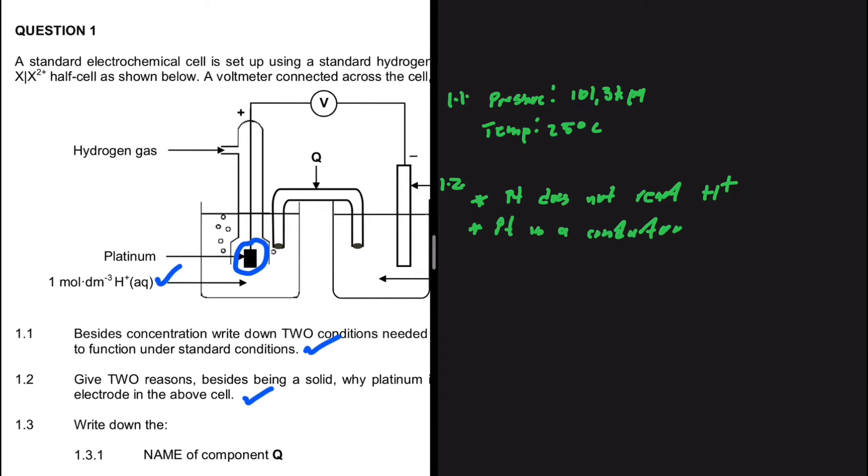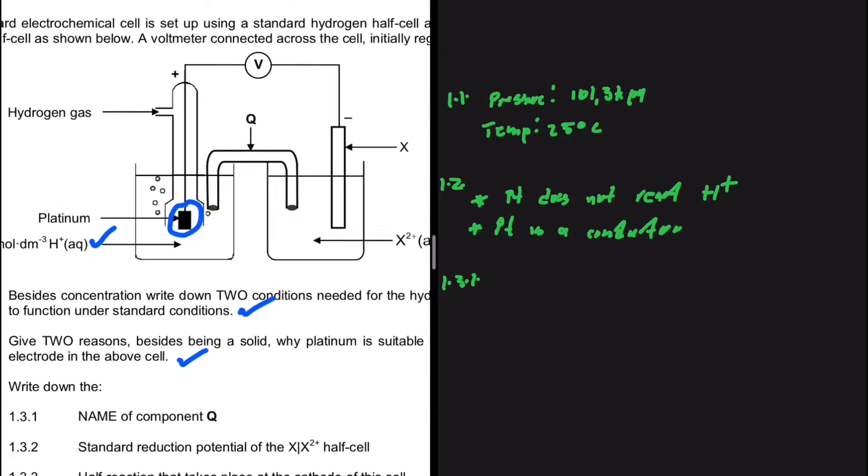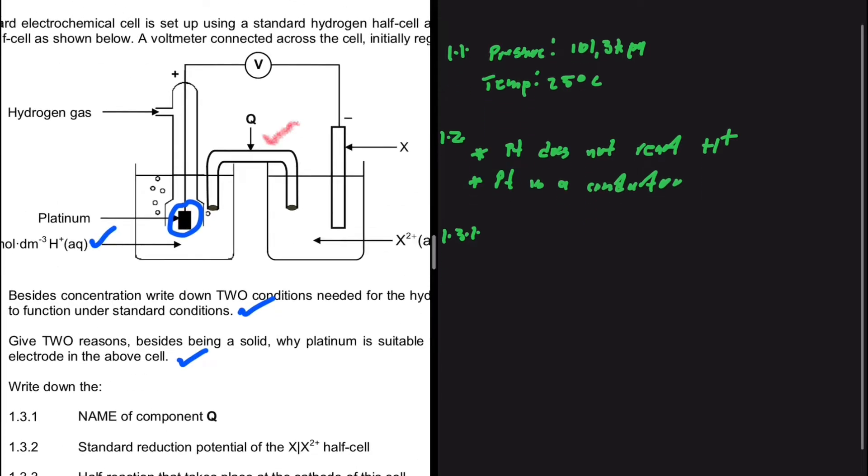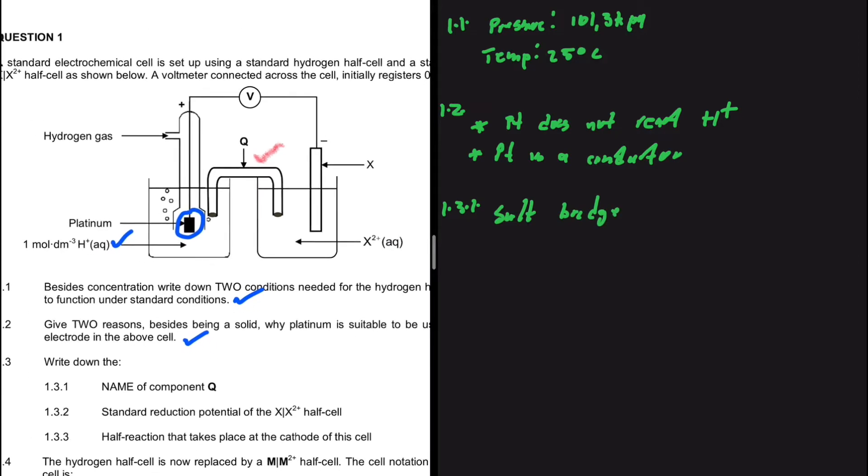At 1.3, we're supposed to write down the name of component Q. This is a galvanic cell and component Q should be a salt bridge. So there we go. We have a salt bridge in 1.3.1.